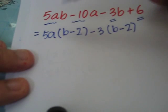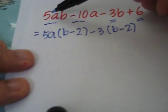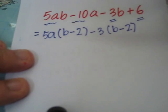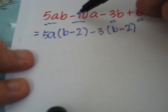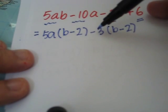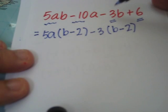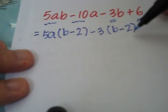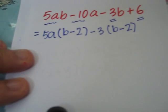Let's check. 3a times b, 3ab. 3a times negative 2, negative 6a. Negative 3 times b, negative 3b. Negative 3 times negative 2, positive 6.